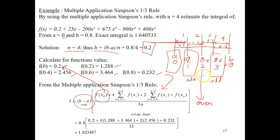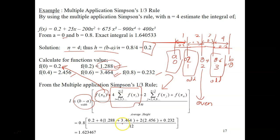For the odd points, we substitute their values — this one, this, and this. We substitute their values into the term with the factor of 4. Inside the bracket, this is the summation of all the odd points: 1.288, which is the first odd point, plus 3.464, which is the next odd point. That settles the odd points.